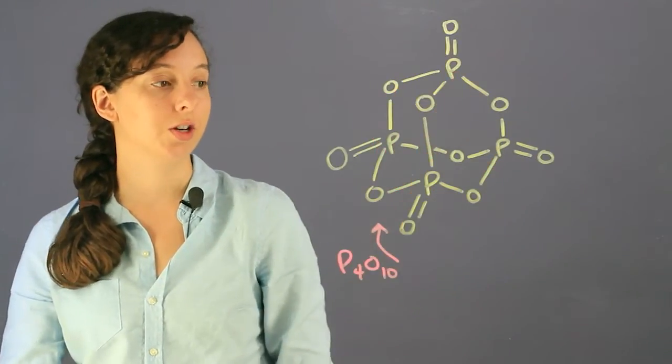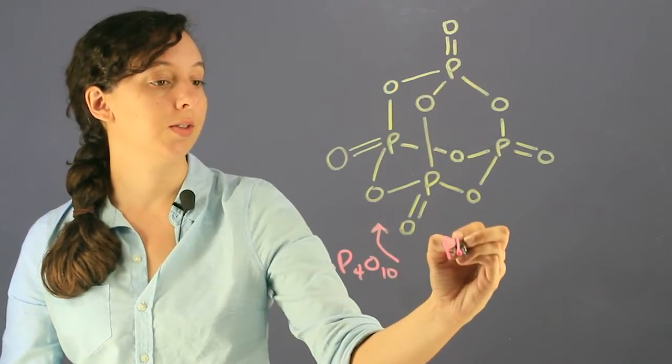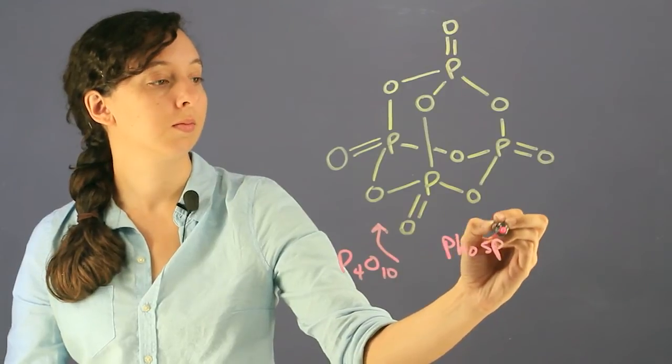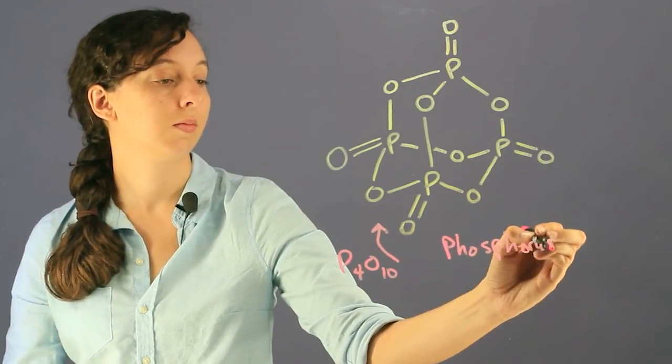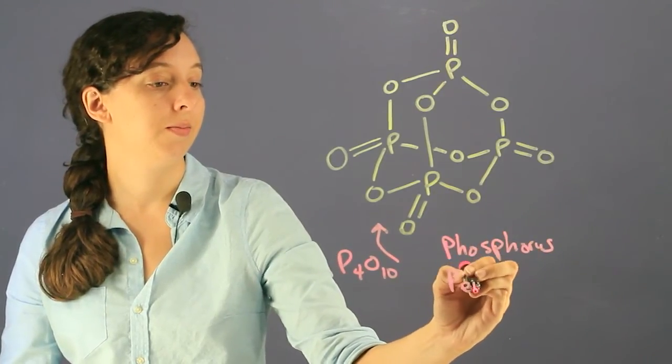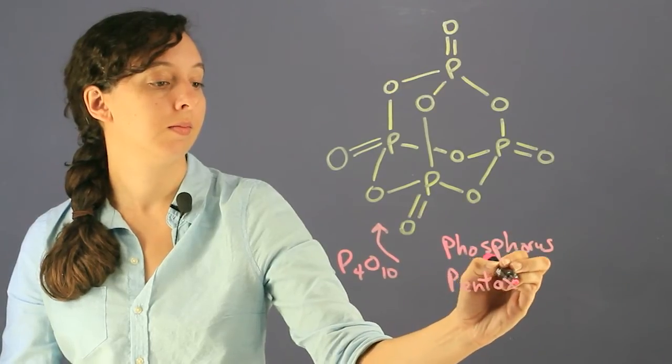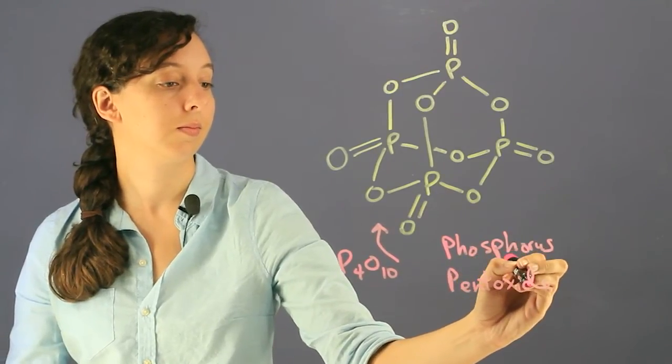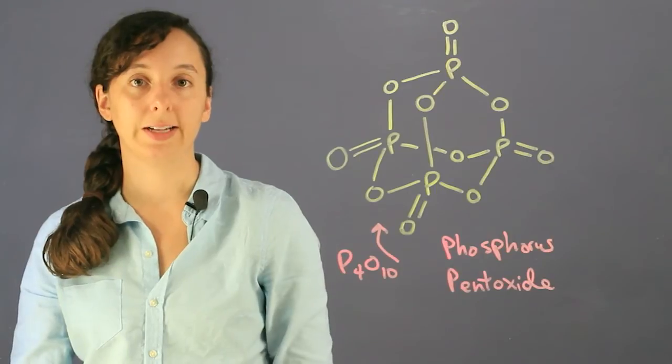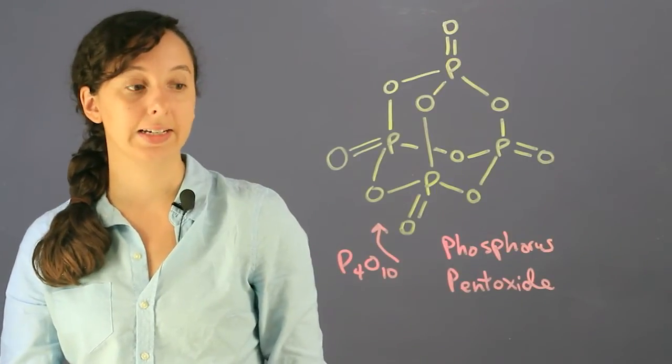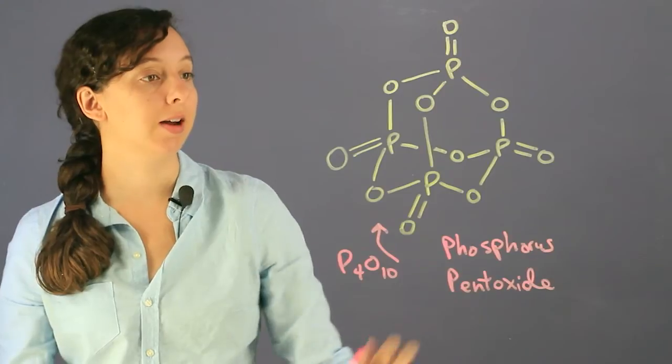The name of this structure is phosphorus pentoxide, and it's used primarily as a drying agent. It comes from phosphoric acid, and so some facts about it.